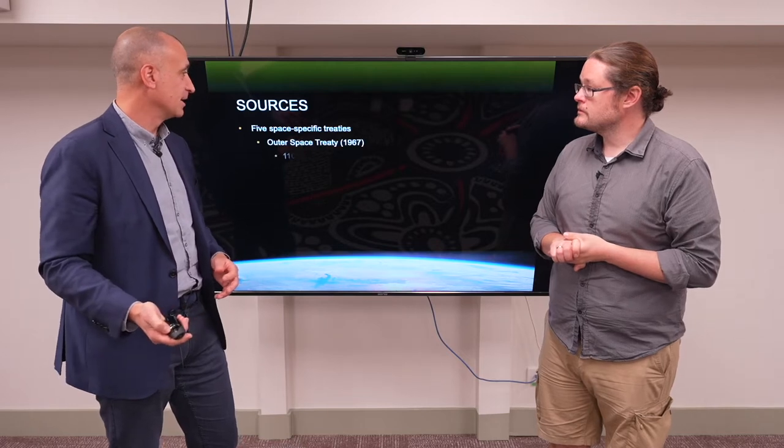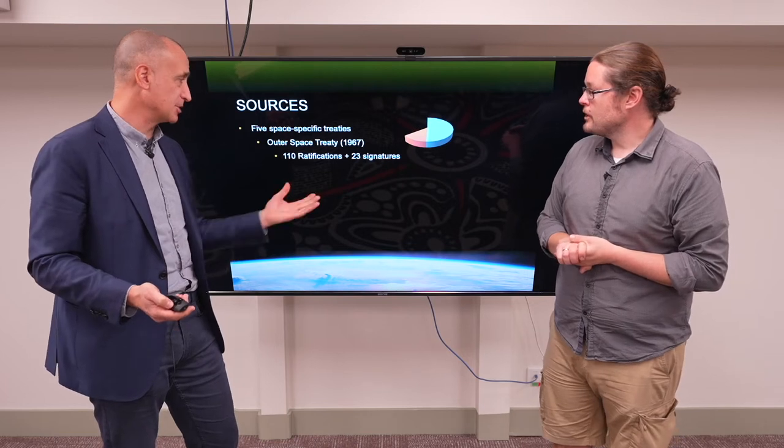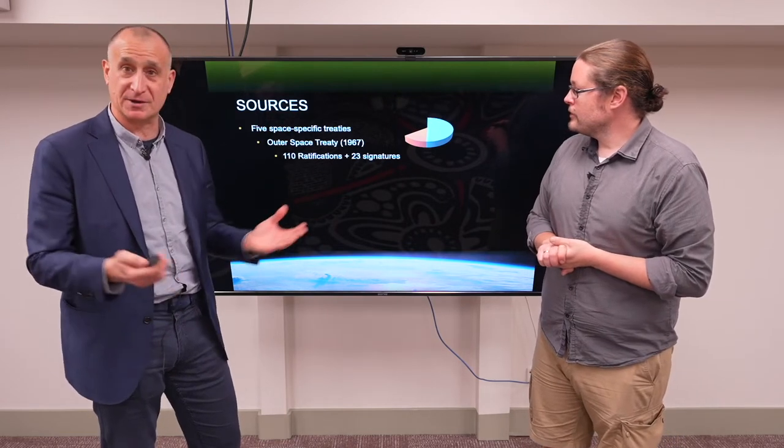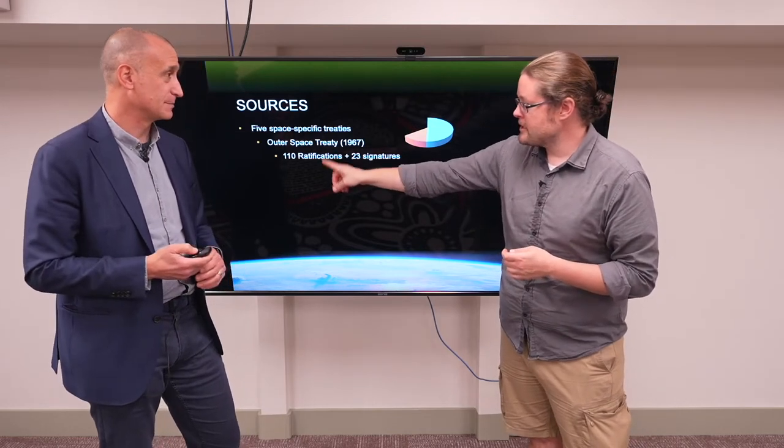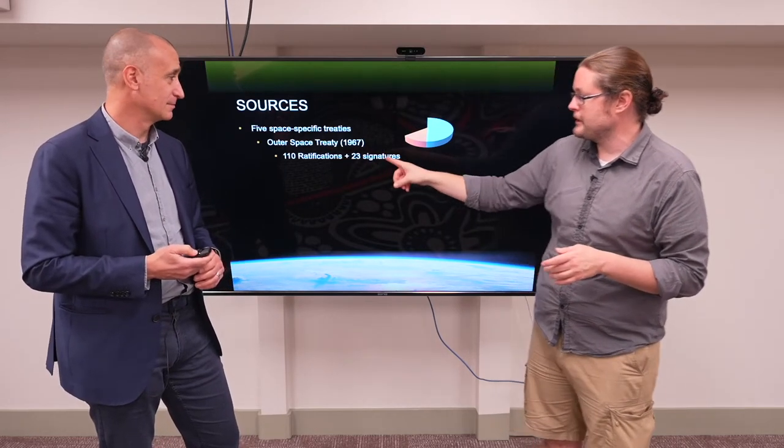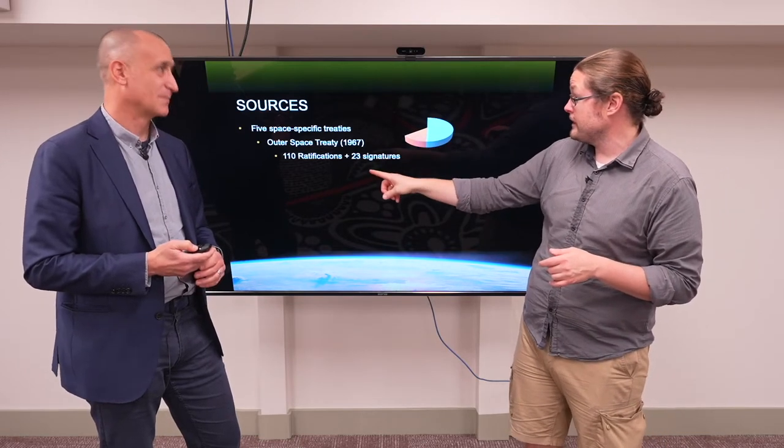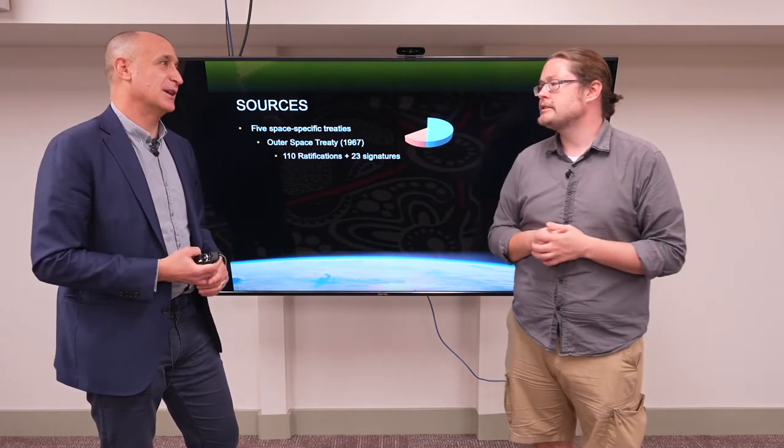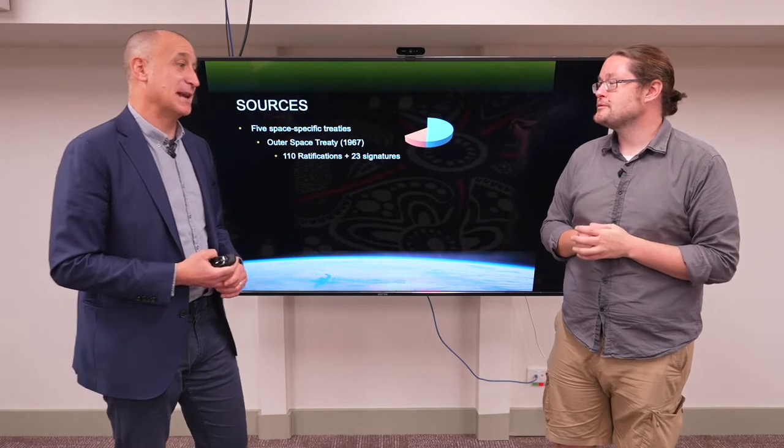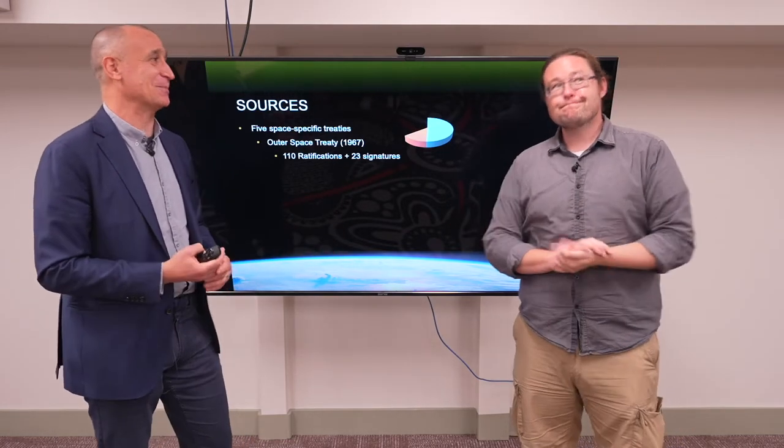And there are five space specific treaties, starting with the Outer Space Treaty that's been ratified by 110 countries and 23 other countries have signed the Outer Space Treaty. So does this mean 110 parliaments have ratified it, but then 23 additional diplomats have signed, but their governments haven't ratified it? That's correct. Okay. And the expectation is they will at some point? They will at some point. They may never get around to it. It's just not high on the agenda for their particular parliament.